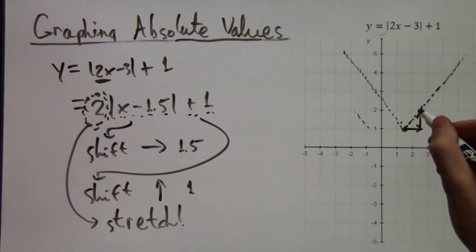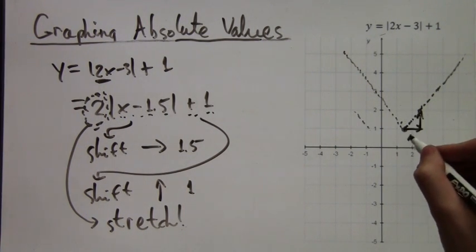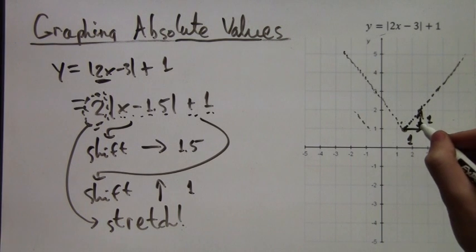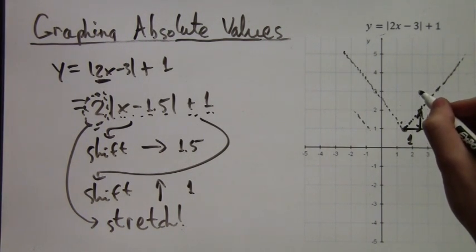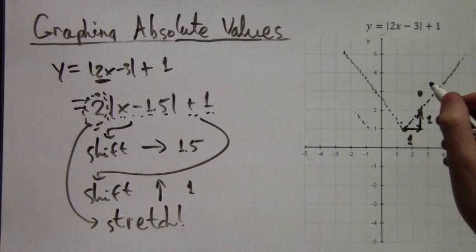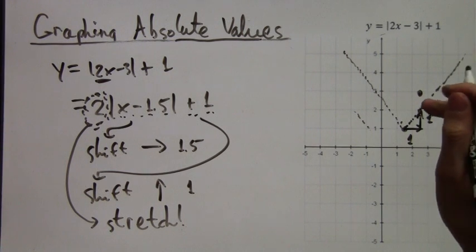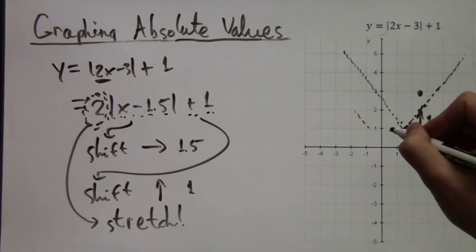Well, what happens is that first let's look at the right side of the cusp. If we move 1 to the right, then instead of moving 1 up, we're going to move 2 up. So we draw a point there. And we know that the rest of it is going to be a straight line still. So these two points give us sort of the straight line for one side of the corner.